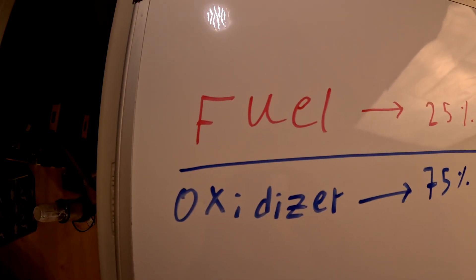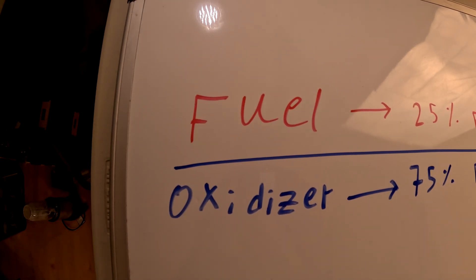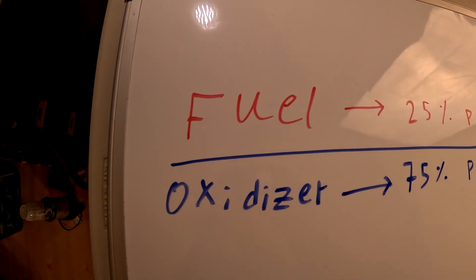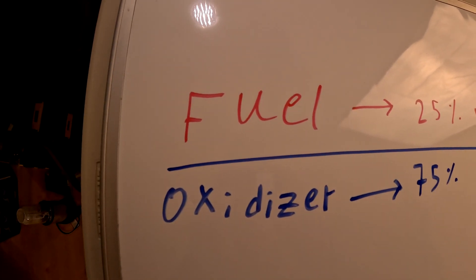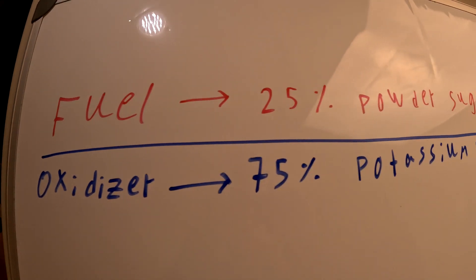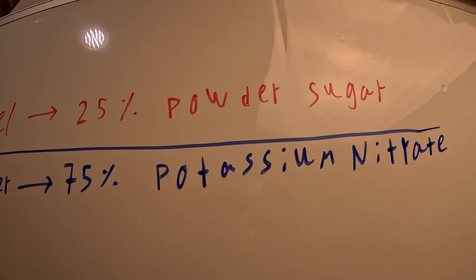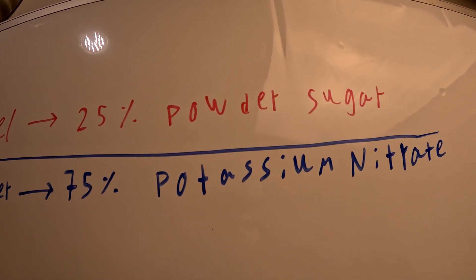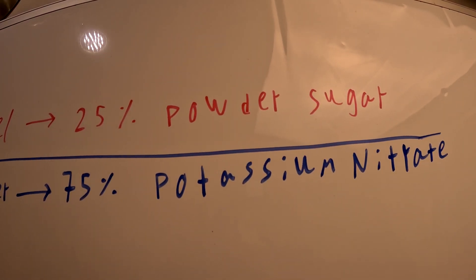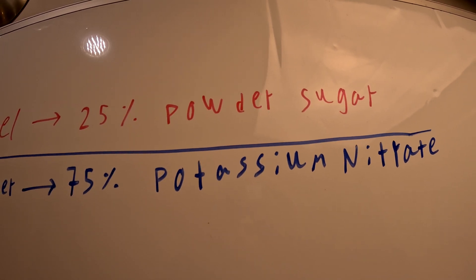First, we have to decide what our rocket motor will be powered by. Solid rocket motors typically have a fuel and an oxidizer. I chose powdered sugar as the fuel since it is easy to get and handle. And for the oxidizer, I chose potassium nitrate since it is also easy to get and inexpensive.